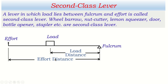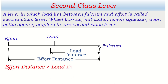Looking at this diagram, we can see that effort distance is always longer than load distance in a second class lever, because the load is in the middle between effort and fulcrum. That's why load distance is always less and effort distance is always more than load distance.